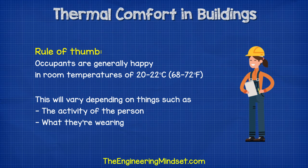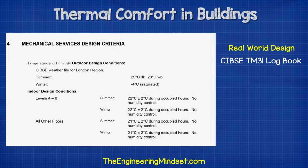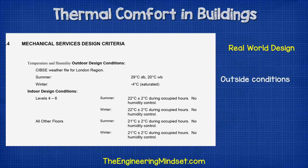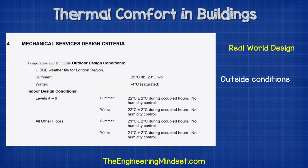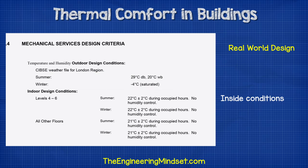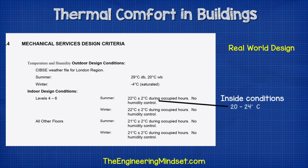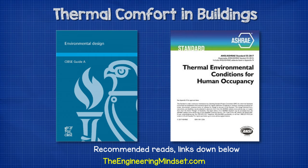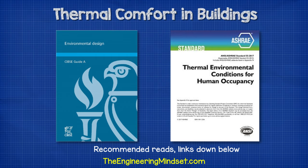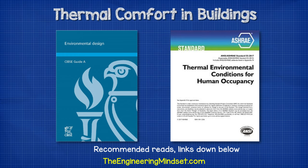To give you an example of a real-world design, this is an extract from a CIBSE TM31 building logbook for a new office building in London. You can see the building was designed for outside conditions in summer of 29 degrees Celsius and in winter of negative 4 degrees Celsius. The office area within the building is designed to be 22 degrees Celsius with a 2-degree buffer, meaning it can be anywhere from 20 to 24 degrees Celsius. If you want to get deep into the details of design, ASHRAE 55 and CIBSE Guide A are some of the most widely used industry guides for thermal design and comfort.